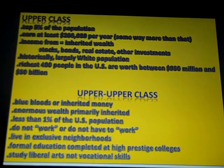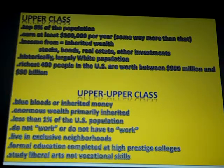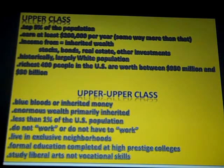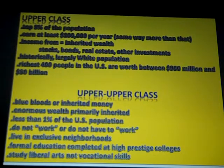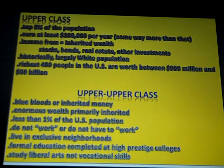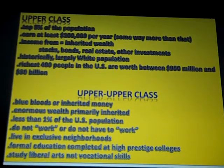We'll start with the upper class. Generally speaking, we're looking at the top 5% of the population in this country. They earn at least $200,000 per year — and sometimes way more — that $200,000 figure is really a floor number. Their income largely comes from inherited wealth, stocks and bonds, real estate, and other investments. Historically, this has been a predominantly Caucasian population. The richest 400 people in the United States are worth somewhere between $950 million and $50 billion.